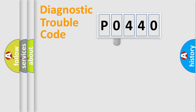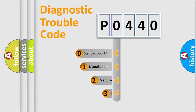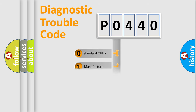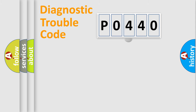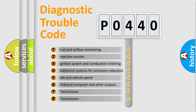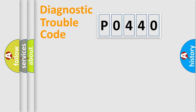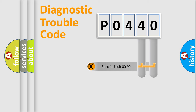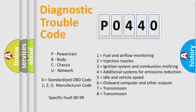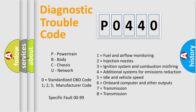This distribution is defined in the first character of the code. If the second character is expressed as zero, it is a standardized error. In the case of numbers 1, 2, or 3, it is a manufacturer-specific error. The third character specifies a subset of errors. This distribution is valid only for standardized DTC codes, and the last two characters define the specific fault within the group.